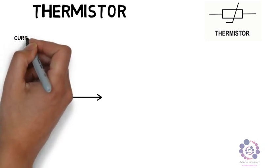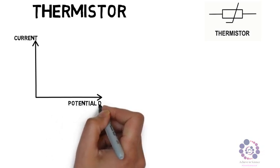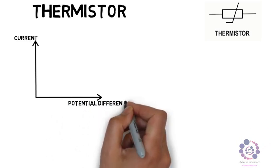Let us now draw a graph where we have current on the y-axis and potential difference on the x-axis. You'll find that we have a straight line.